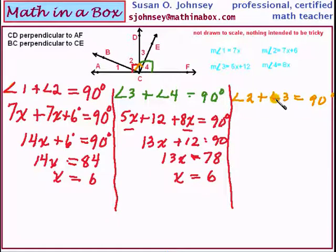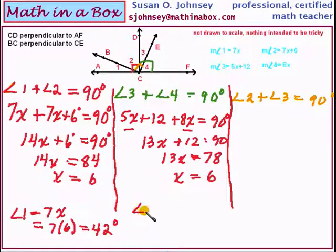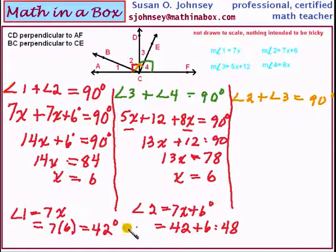Angle 1 is 7x so that means angle 1 is 7 times 6 or 42 degrees. The measure of angle 1 is 42. Remember that angle 2 is 7x plus 6. So we will have the 42 again plus 6 which is 48. Now remember that angle 1 and angle 2 were 90 degrees. If you add the 48 and the 42, do you get 90? Sure. These do create a right angle, 90 degrees.